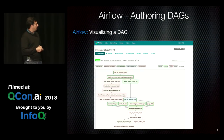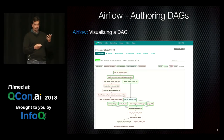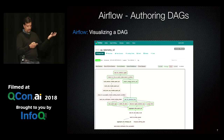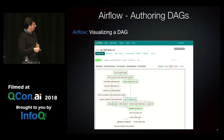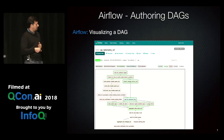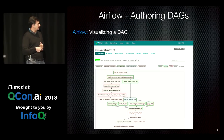If you pick one of these DAGs and click on it, you'll come to the graph view — the pictorial view of the graph you're executing. This is a graph of computation. These are the tasks, chained together in a dependency tree. This is the first one to run; after which, if it's successful, this will run. If that's successful, it will go down these two paths.